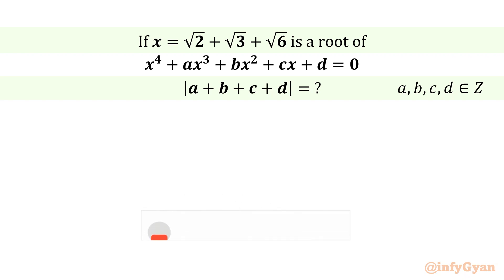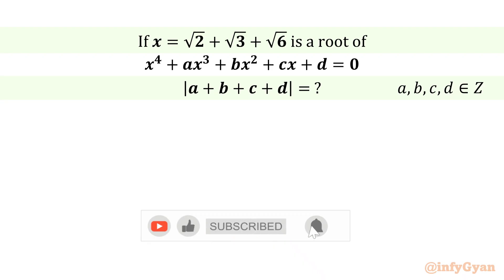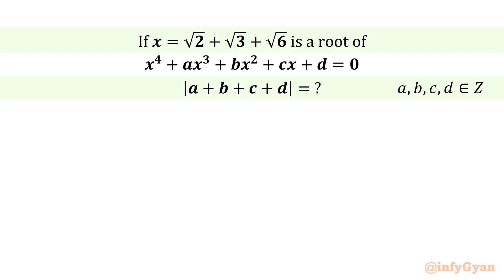Hello everyone, welcome back to Infigyan. Today in this video we have one very interesting question from algebra. If x is equal to square root 2 plus square root 3 plus square root 6, and it is the root of x power 4 plus ax cubed plus bx squared plus cx plus d equal to 0, then we have to evaluate the absolute value of a plus b plus c plus d, given that a, b, c, d are integers.